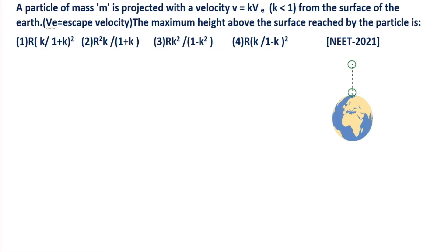Our first question is: a particle of mass M is projected with a velocity V equal to kVe from the surface of the earth. The maximum height above the surface reached by the particle is? He told that this is a particle of mass M which is projected with a velocity V equal to kVe, and he gave the value of k as less than 1.